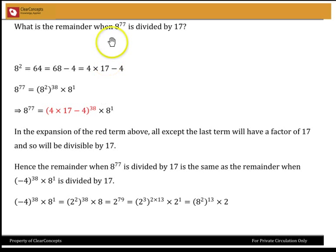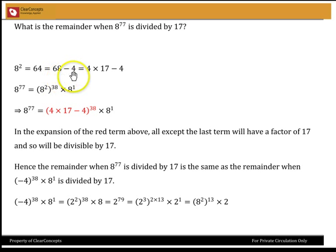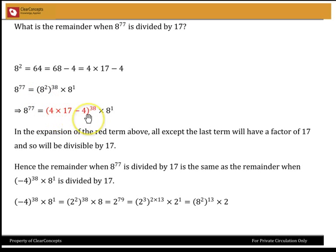This could have been done in a different manner. Same example: 8 squared is 64, which is 68 minus 4. And 68 is 4 times 17, so 8 squared equals 4 times 17 minus 4. So 8 to the power 77 can be written as 8 squared, whole to the power 38, times 8 to the power 1. Replacing 8 squared with 4 times 17 minus 4, this is a binomial expression — expanding it, everything except the last term has a factor of 17. Note that the remainder can be worked with as negative at intermediate steps. So the remainder when 8 to the power 77 is divided by 17 is the same as when minus 4 to the power 38 times 8 to the power 1 is divided by 17.